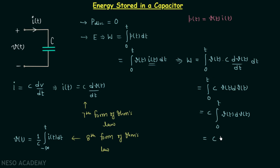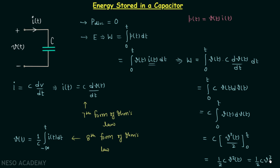The integration of v(t) with respect to v(t) equals v(t)² / 2. So we have C times [v²(t)/2] evaluated from zero to t, which gives us (1/2)·C·v²(t). We can write v²(t) simply as v² since voltage is a function of time. Therefore the result is (1/2)·C·v², which is the energy stored in a capacitor.